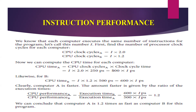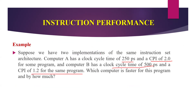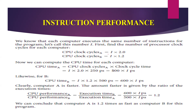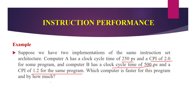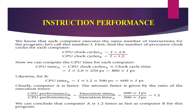First, find the number of clock cycles for each computer. CPU clock cycles for machine A equals I multiplied by 2.0. And for machine B, the CPU clock cycles equal I multiplied by 1.2.